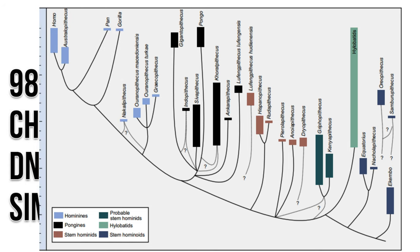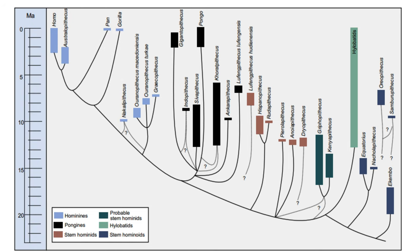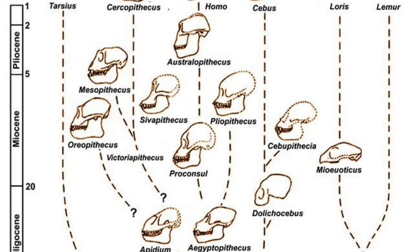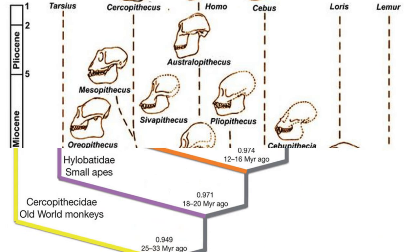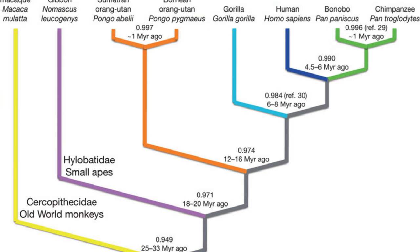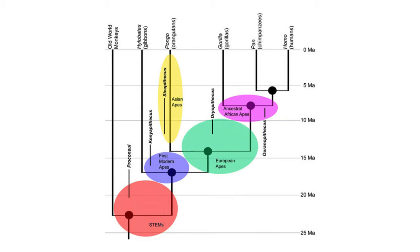The study of molecular clocks and fossil records has provided significant insights into the evolutionary history of apes, particularly in relation to the divergence between humans and chimpanzees and the spread of various ape species across Asia and Europe. Initial molecular clock estimates placed the divergence of humans and chimpanzees between 4 and 8 million years ago, consistent with fossil evidence of early human ancestors dating back around 7 million years.